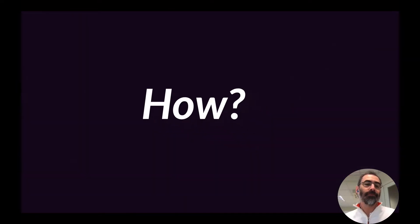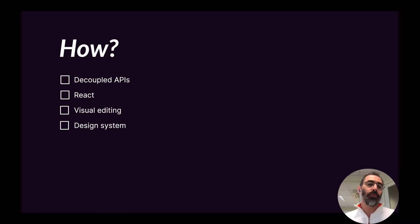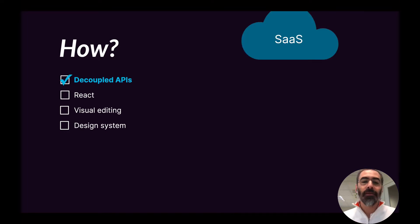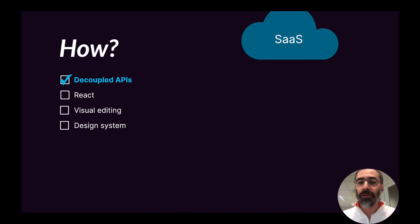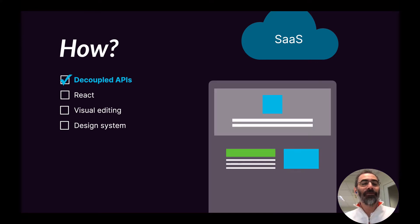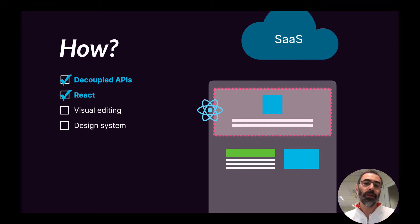So how did we create it? We needed decoupled APIs, React, visual editing, and the ability to express a design system. For the decoupled APIs, we just created them — you know, that's the easy part; we are frontend developers, so of course I'm joking. Then for React, the page is composed of content blocks and these blocks are just React components.